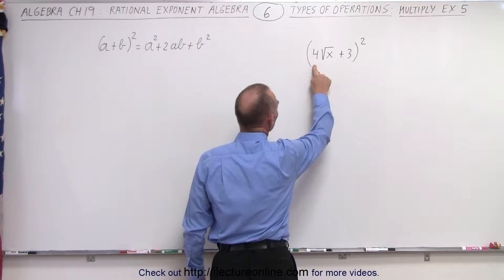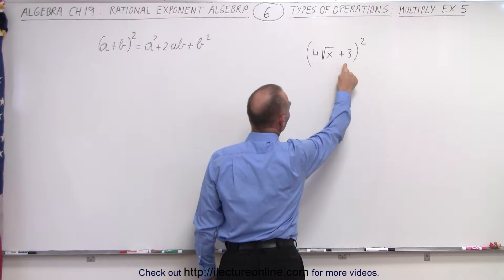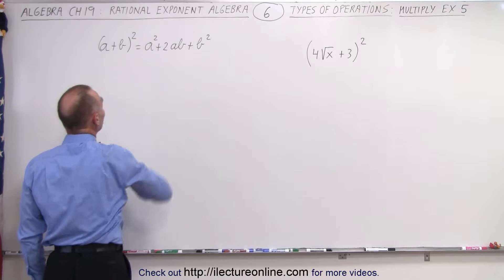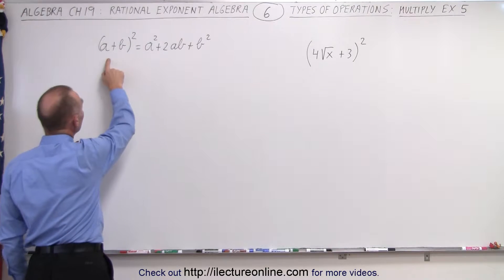Here we have the binomial 4 times the square root of x plus 3, quantity squared. That looks a lot like a plus b quantity squared, and we know the answer to this is we take